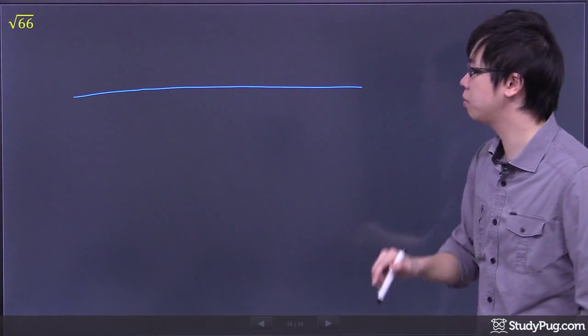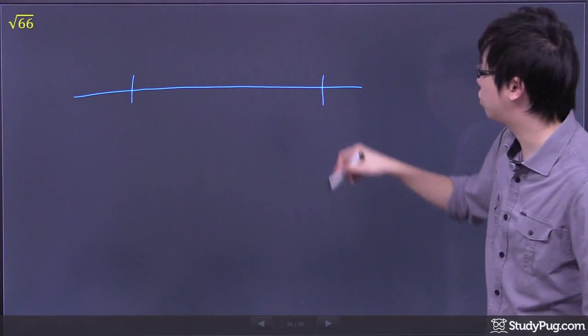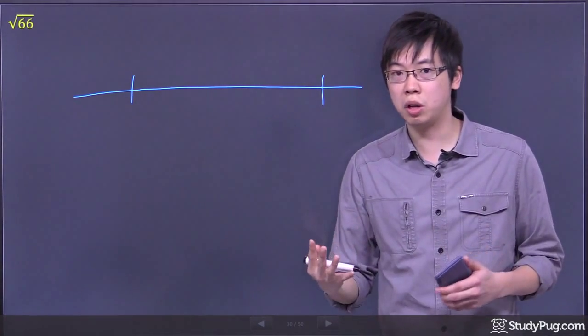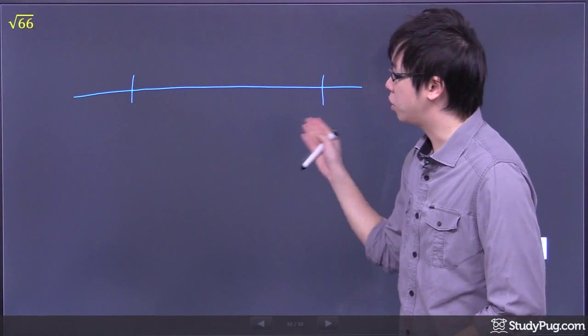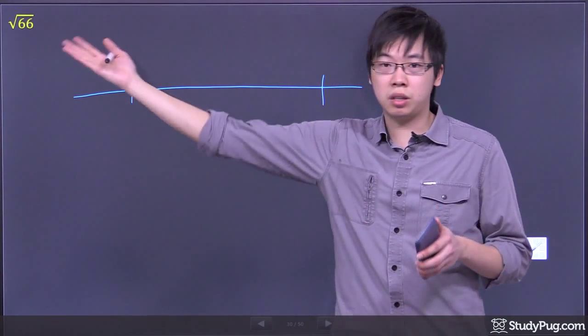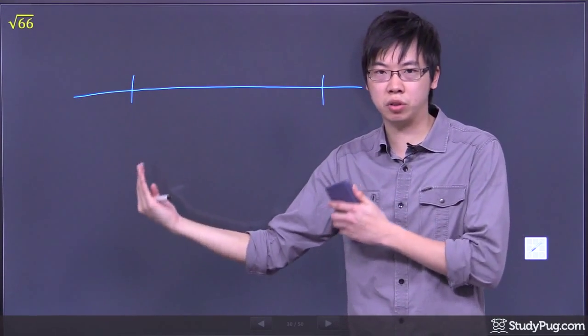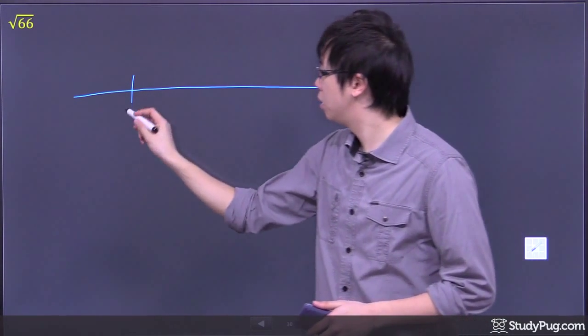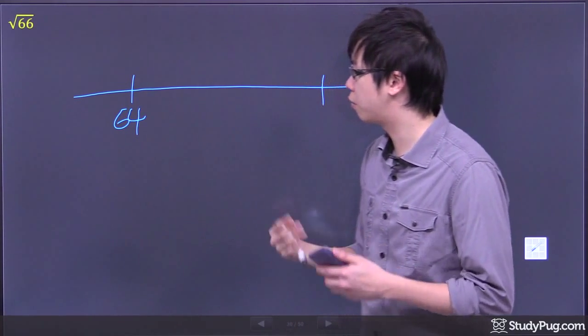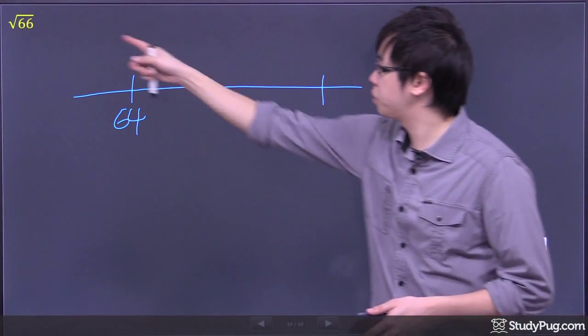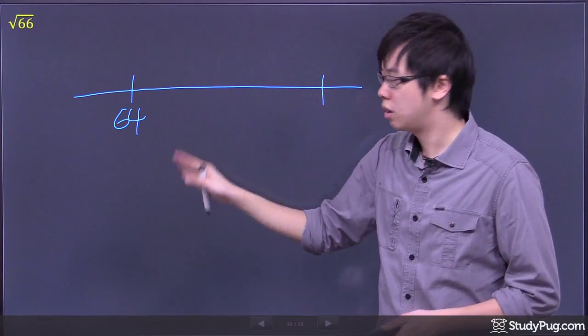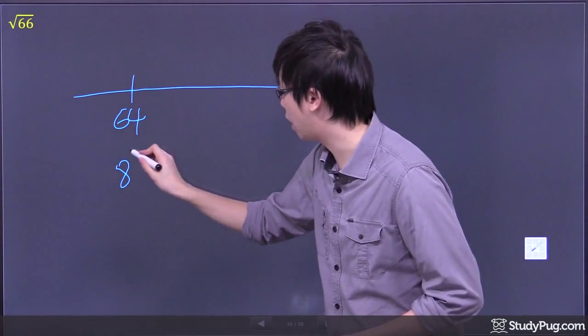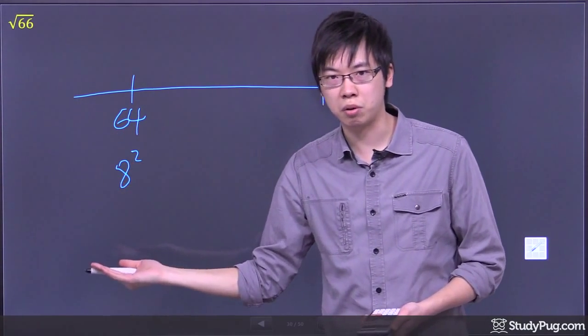You draw yourself a number line and you make yourself two lines right here to represent two numbers. Now these two numbers here is gonna be enclosing the 66, but they have to be perfect square numbers. For example, 64 is the first number that come to me because 66 is greater than 64, right? And 64 turns out to be 8 squared, which is a perfect square number.